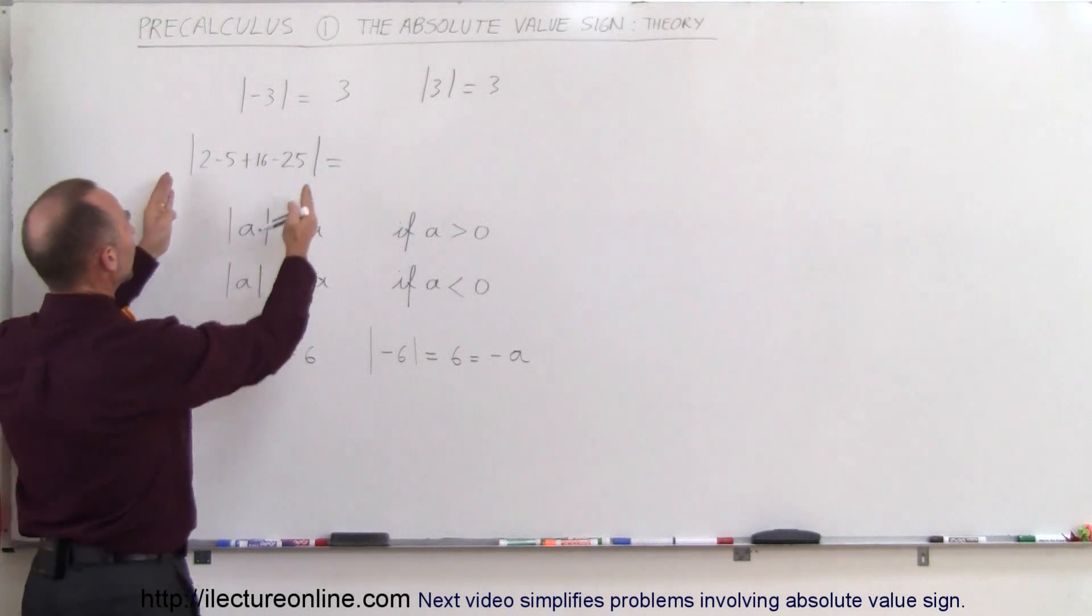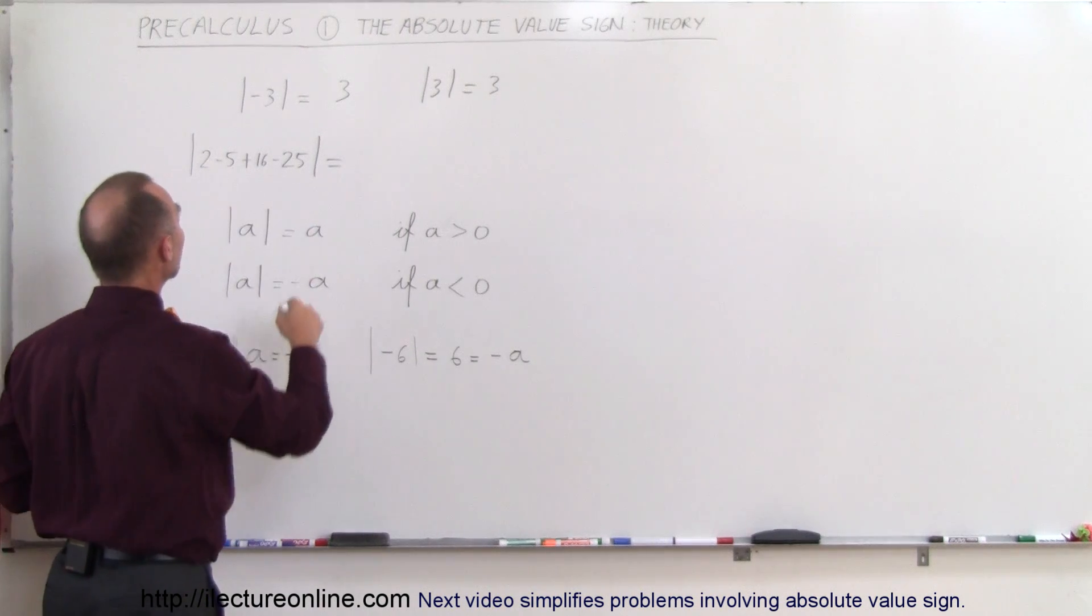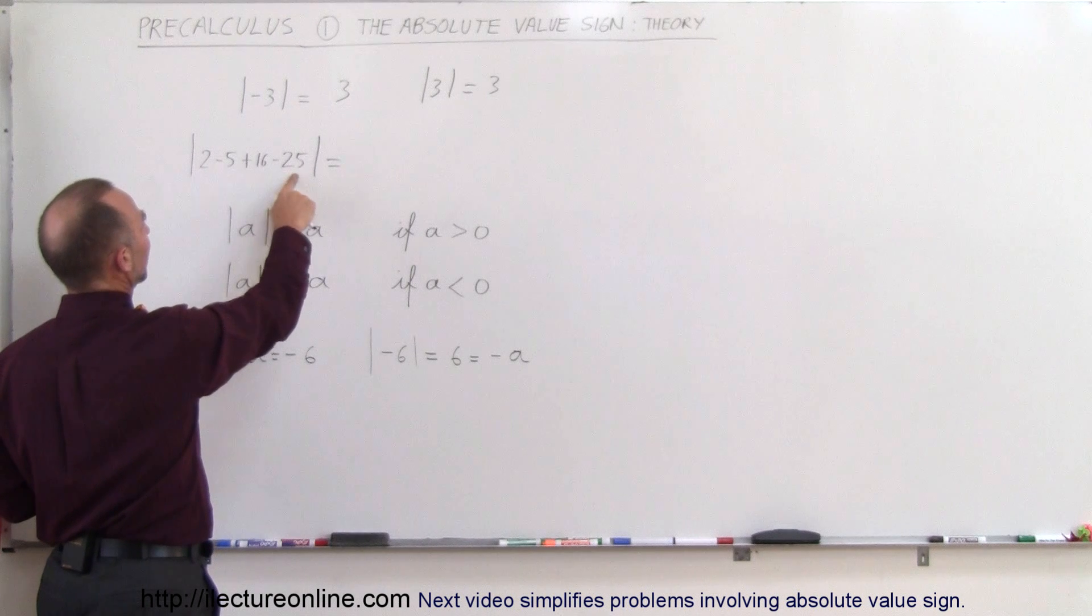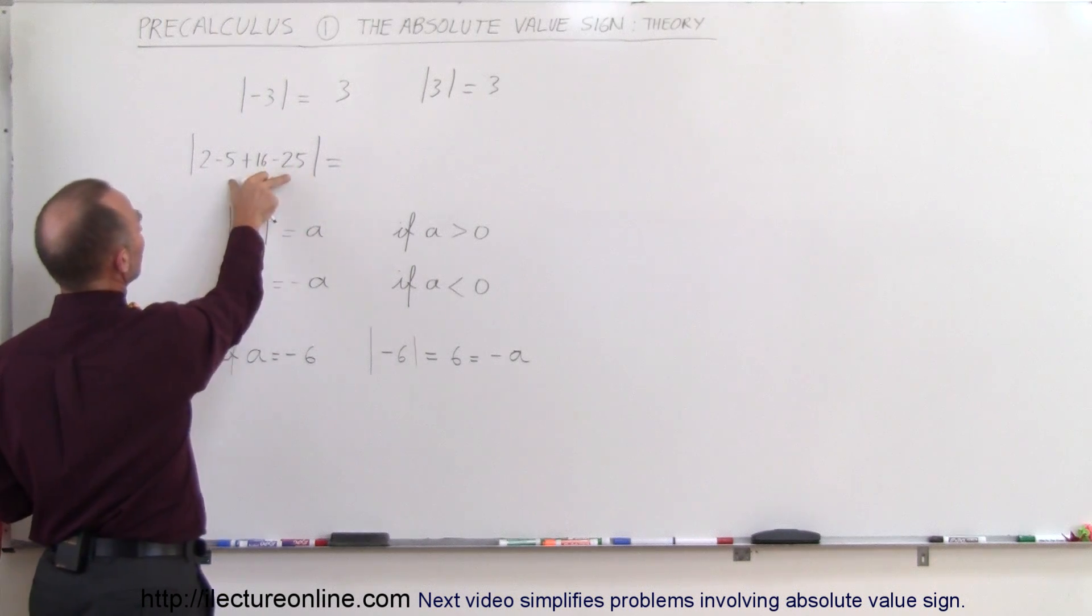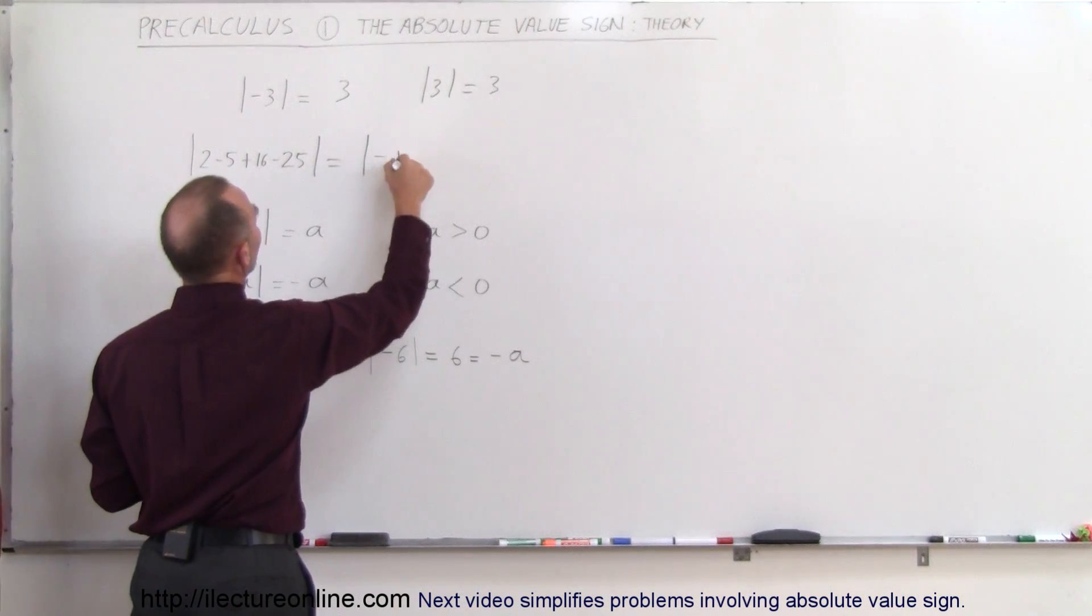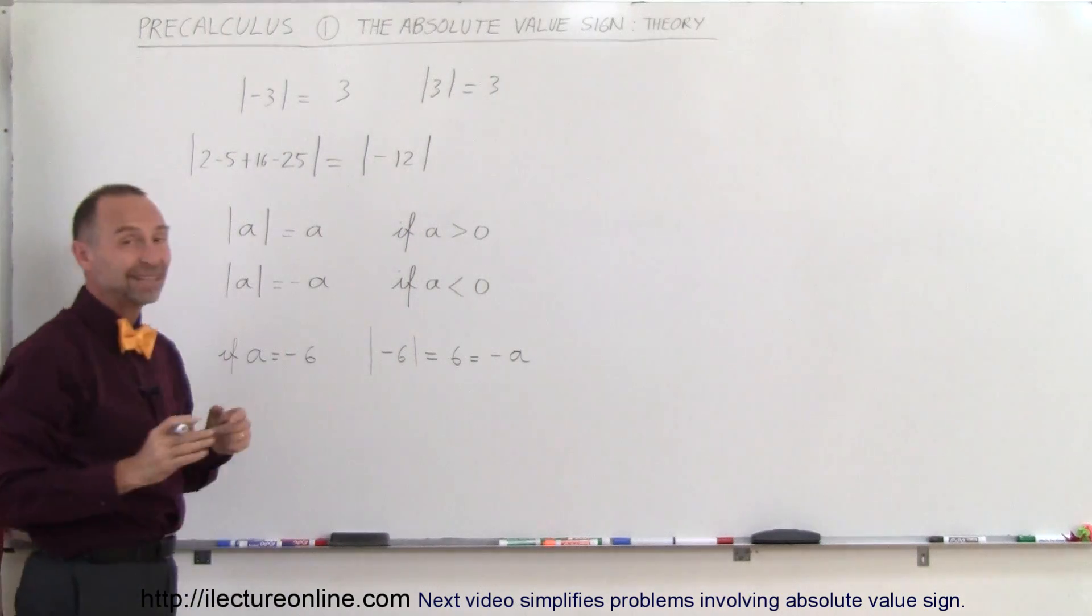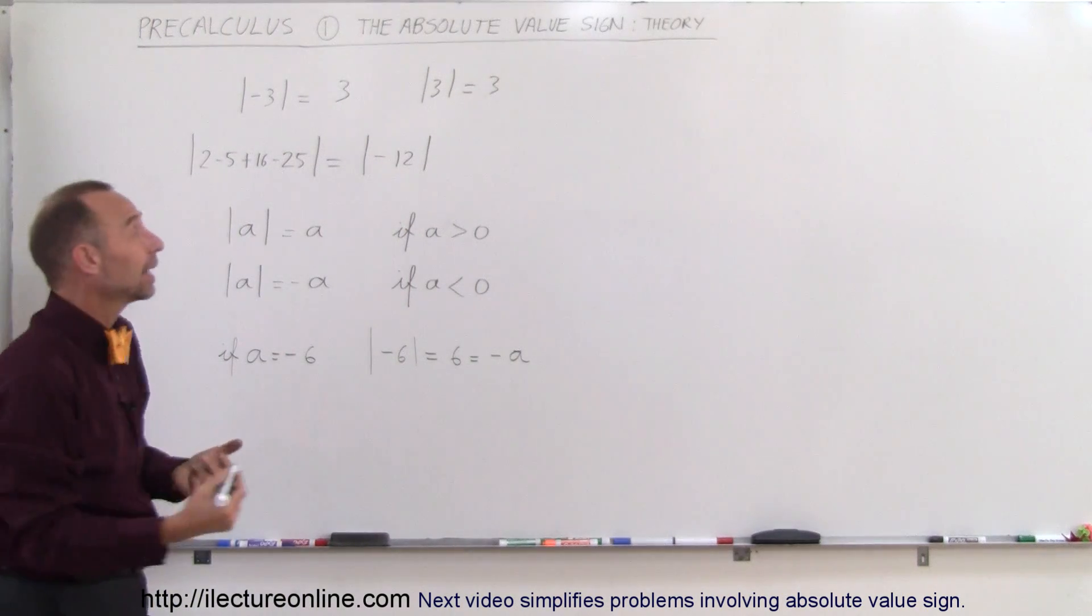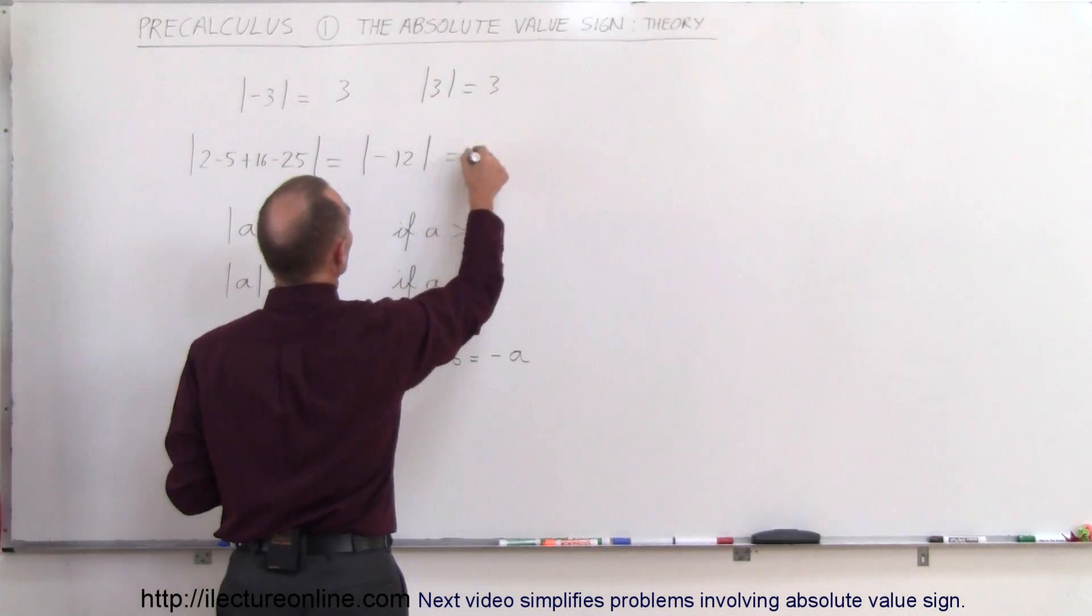Now what if we have a whole expression like that? Well, we first work it out, see what it is. And so we have minus 5 and minus 25 is minus 30, plus 16 is minus 14, plus 2 is minus 12. So this ends up being the absolute value of minus 12. And since the result of this expression is a negative number, we then simply make that into a positive number. So this is equal to 12.